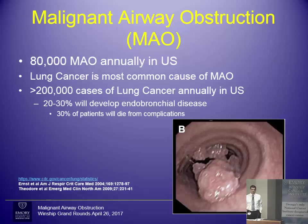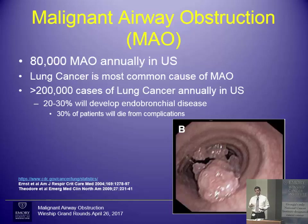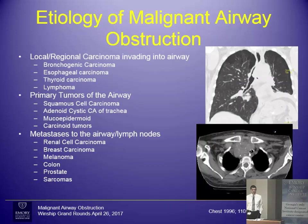There are about 80,000 cases of malignant airway obstruction diagnosed per year in the United States. As you can imagine, lung cancer is the most common cause. But any cancer can metastasize in and around the airway and cause problems. Most people in this room are familiar that there are greater than 200,000 cases of lung cancer diagnosed annually in the US. Up to a third of those patients will actually have endoluminal disease — some sort of cancer eroding into the airway. Most importantly, about a third of them will have mortality related to complications of airway obstruction.